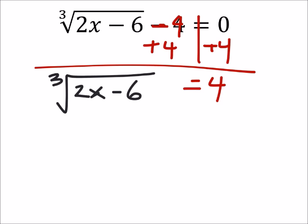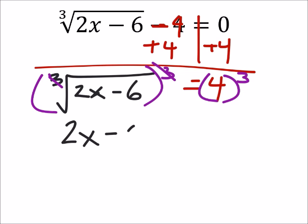And the radical right now is by itself, and it's a cube root. So what I'm going to do is I'm going to take both sides and I'm going to cube both sides. Alright, now when I do that, this cube and this cube root are going to cancel out, leaving us with just the 2x minus 6. And this will equal 4 to the power of 3, which is 64.